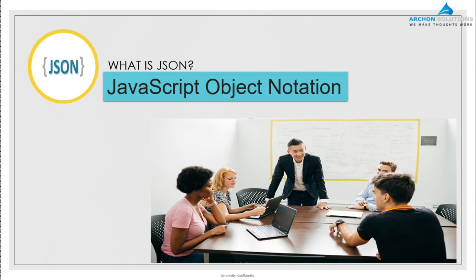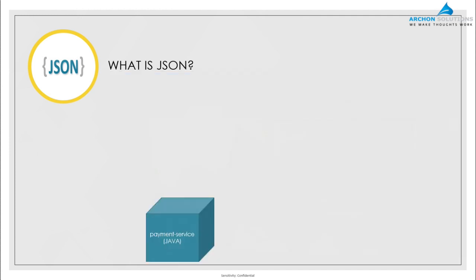Now let's translate this example into the various components in the IT industry, or within an application. How can these various applications or platforms talk to each other? What is the common factor between them? And that is where JSON came in to help.